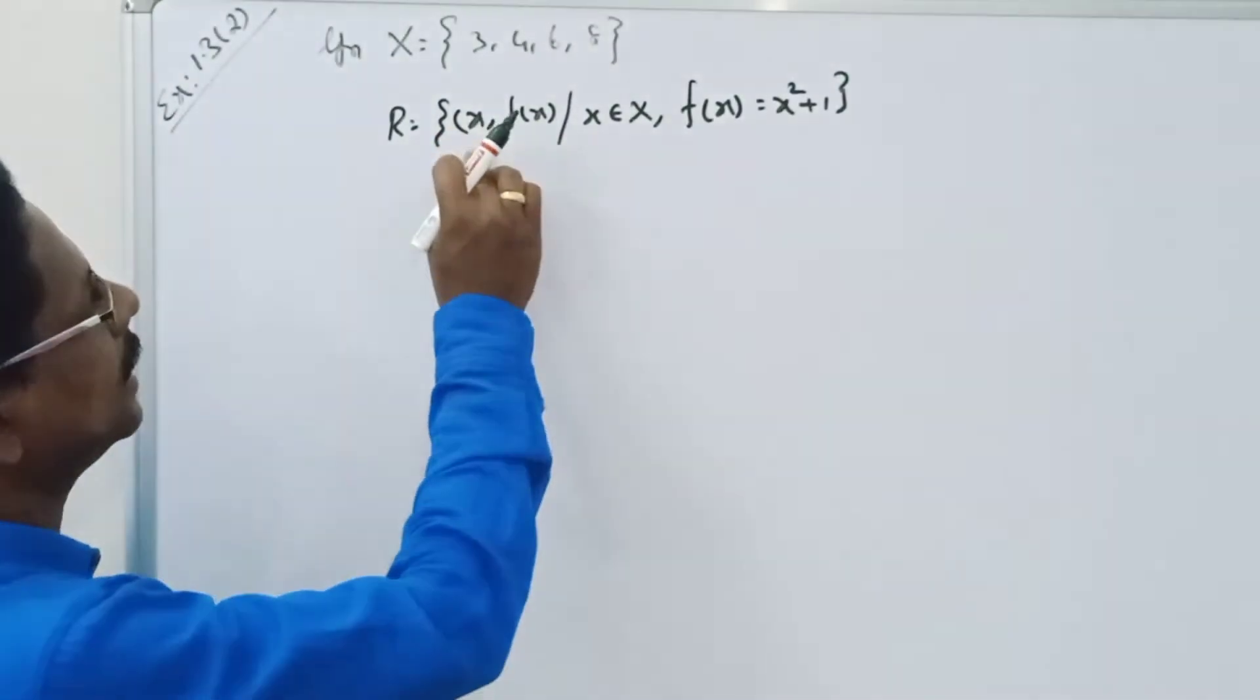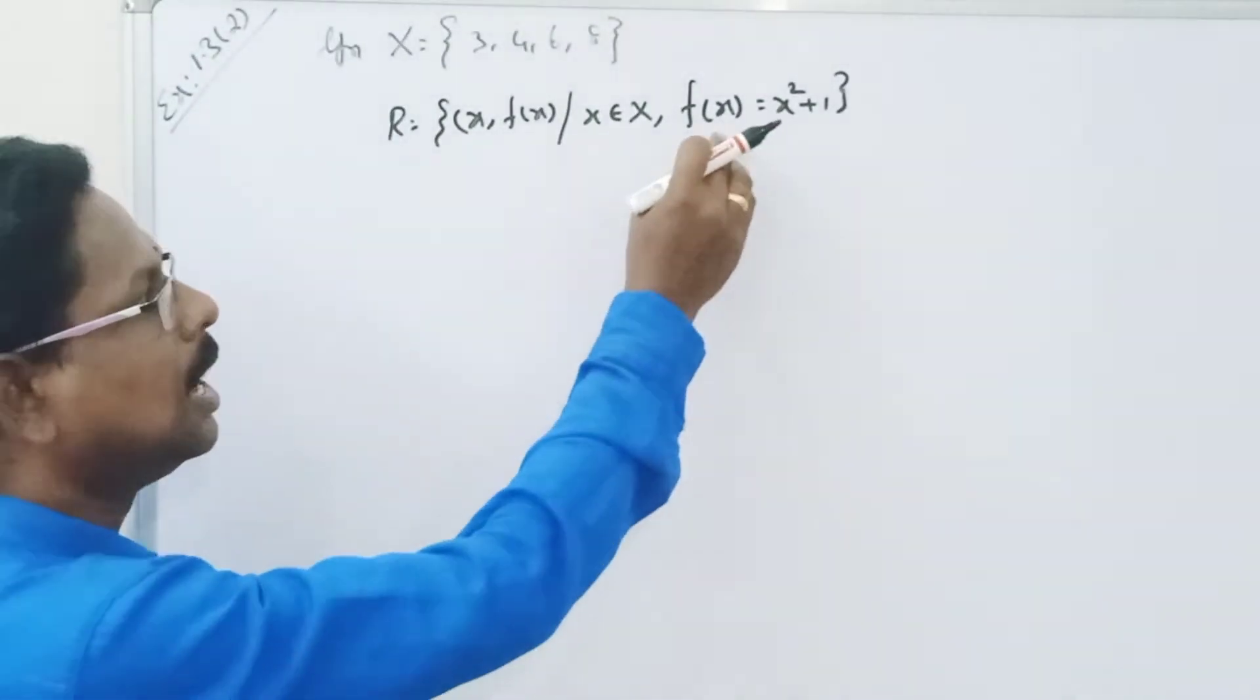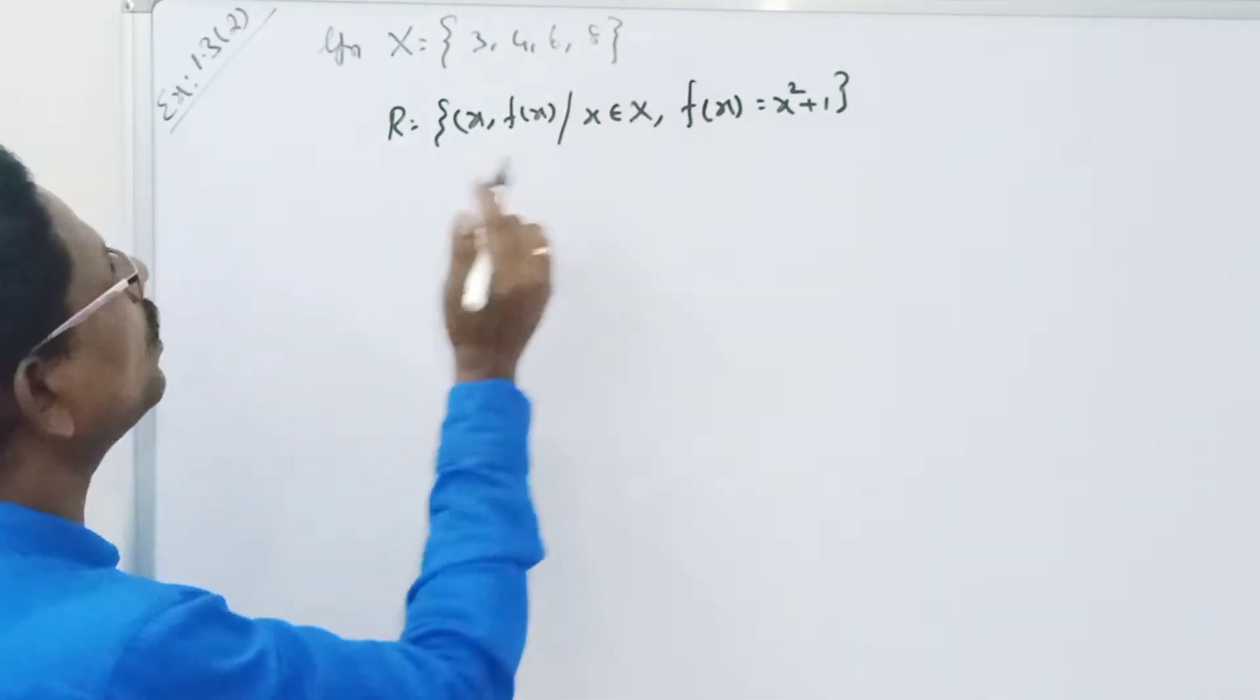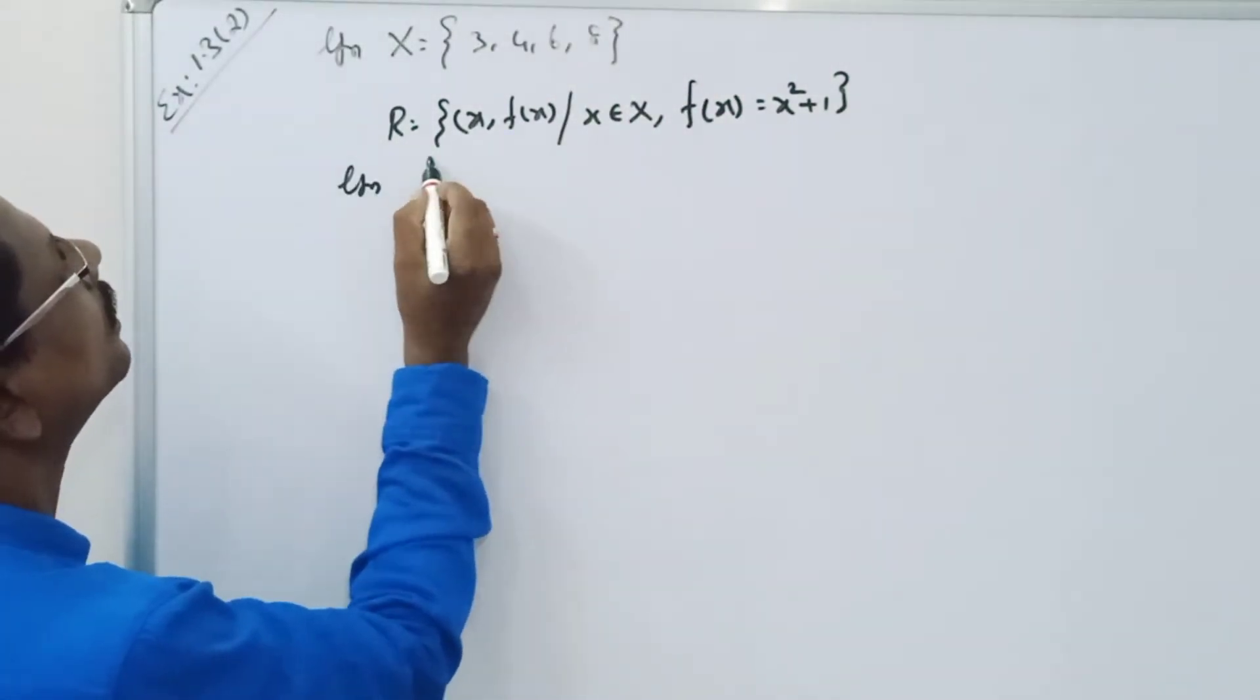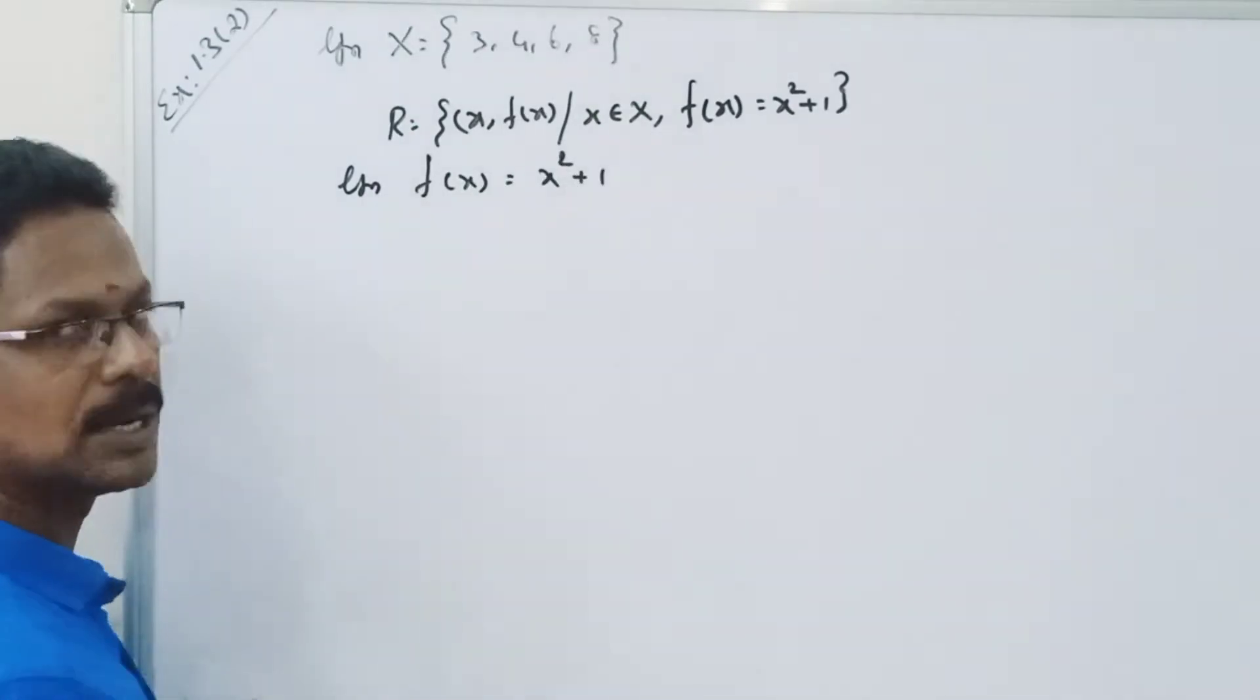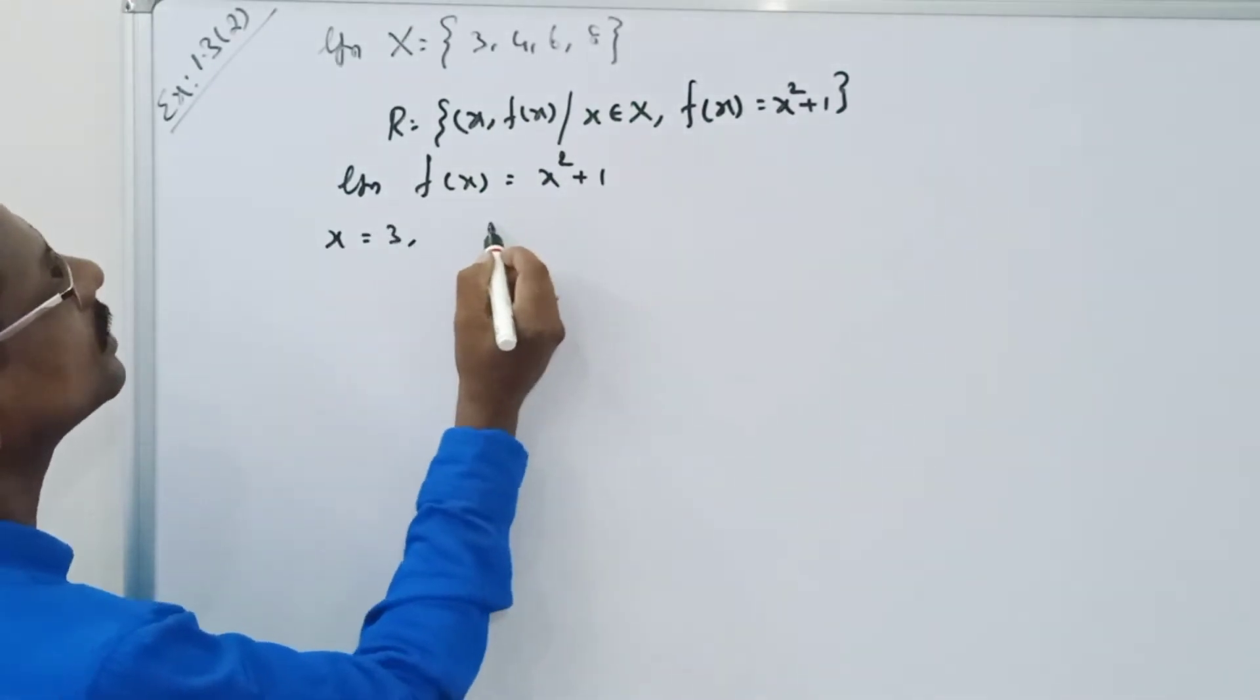Welcome to Mercury Maths. Let x comma f of x, you take y is equal to f of x, and f of x is equal to x square plus 1. In the whole function, what is f of x? You want f of x is equal to x square plus 1.